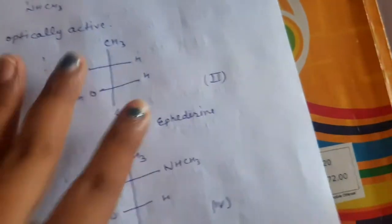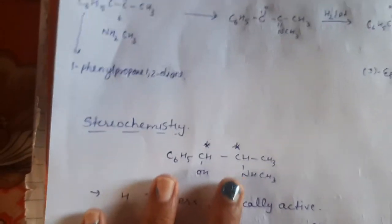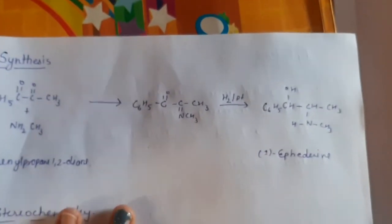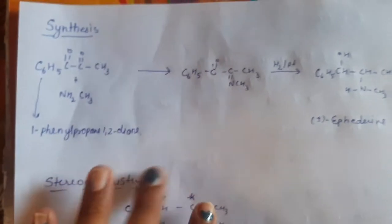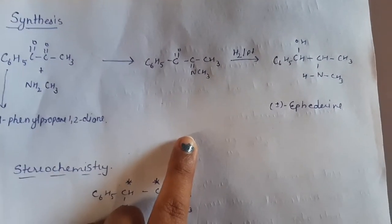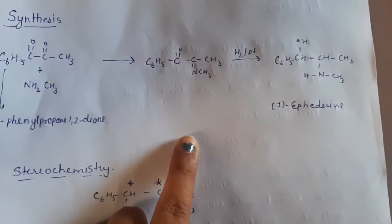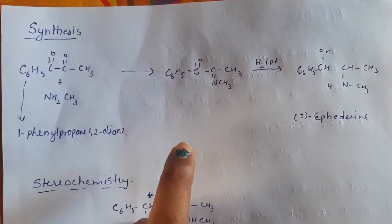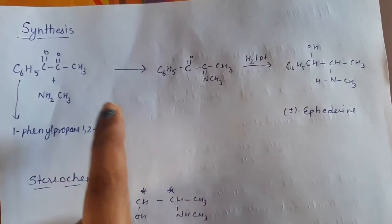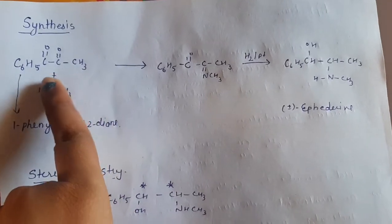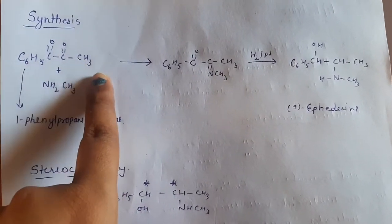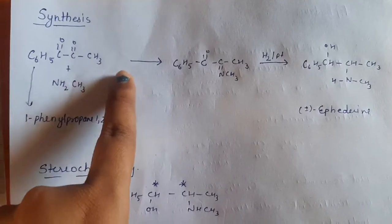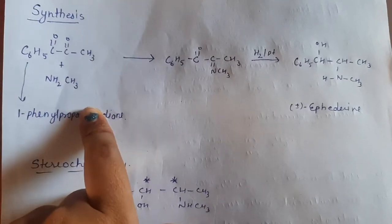This is the synthesis given by a scientist Maneske in 1929. So in the synthesis of this ephedrine, we will take 1-phenylpropane-1,2-dione. So we will take one diketone with methylamine.